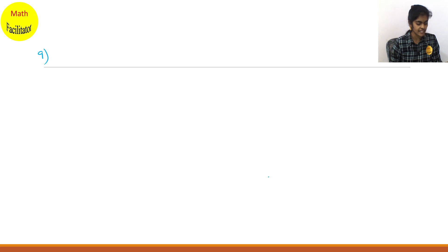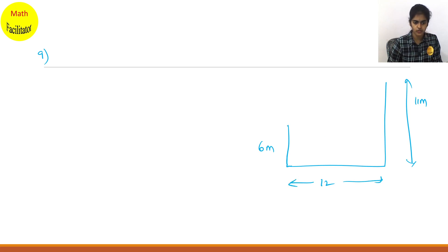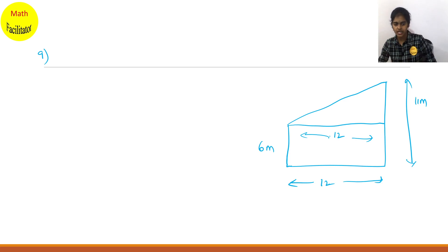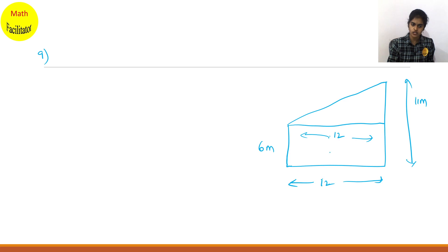Question number 9. Two poles of height 6 meters and 11 meters are on plain ground. On the ground one pole is 11 meters, the other is 6 meters. The distance between the feet of the poles is 12 meters. You have to find the distance between the tops. Both are perpendicular lines, so the distance between them is the same — 12. If two perpendiculars are on the same line, they become parallel lines, so the distance between parallel lines is 12.